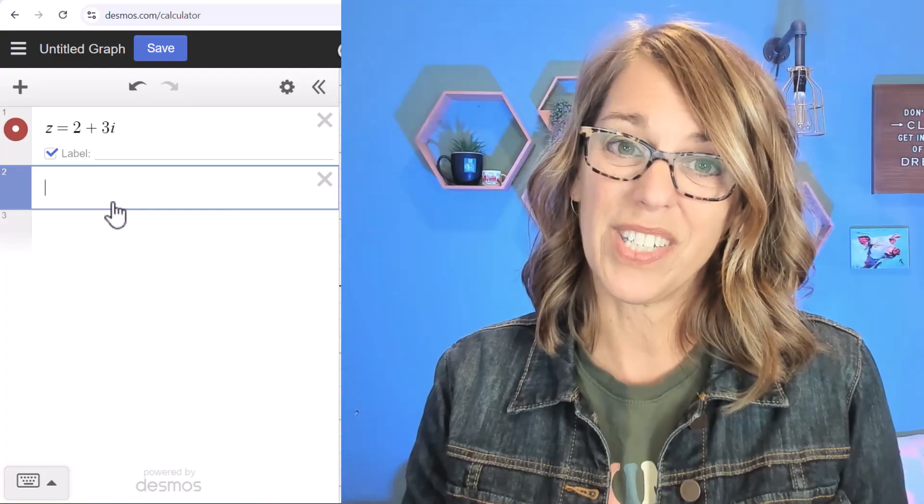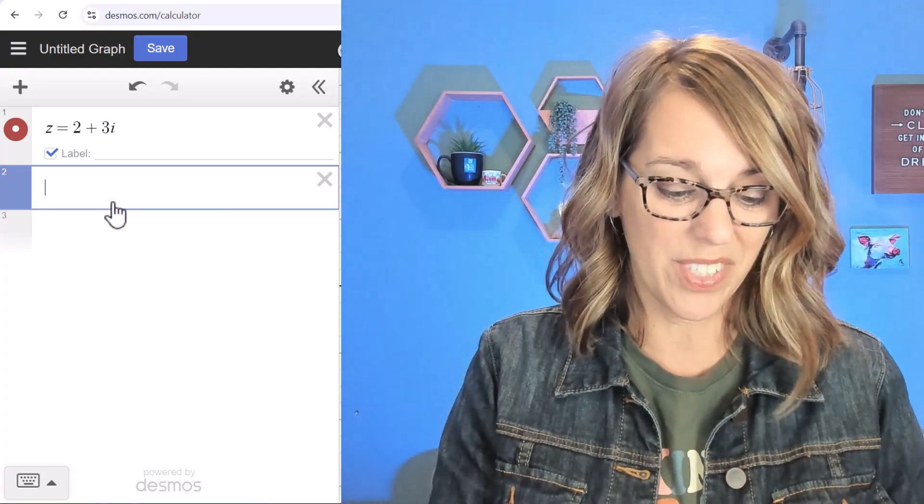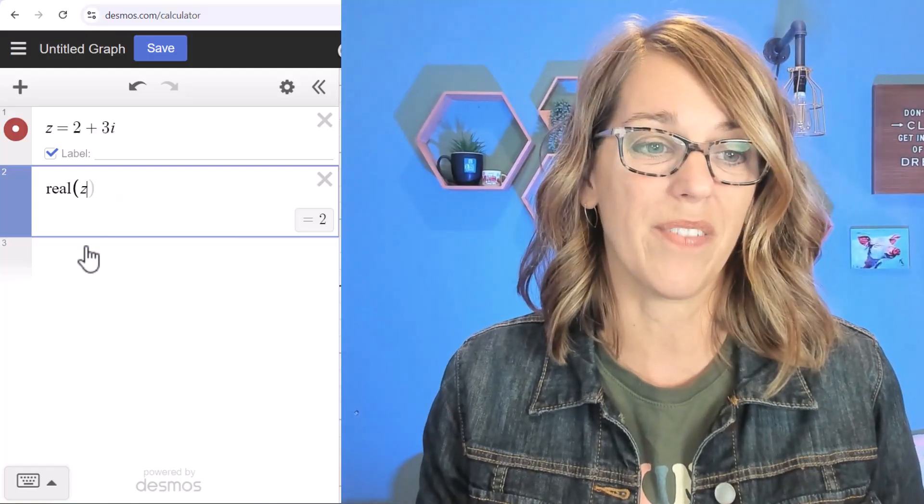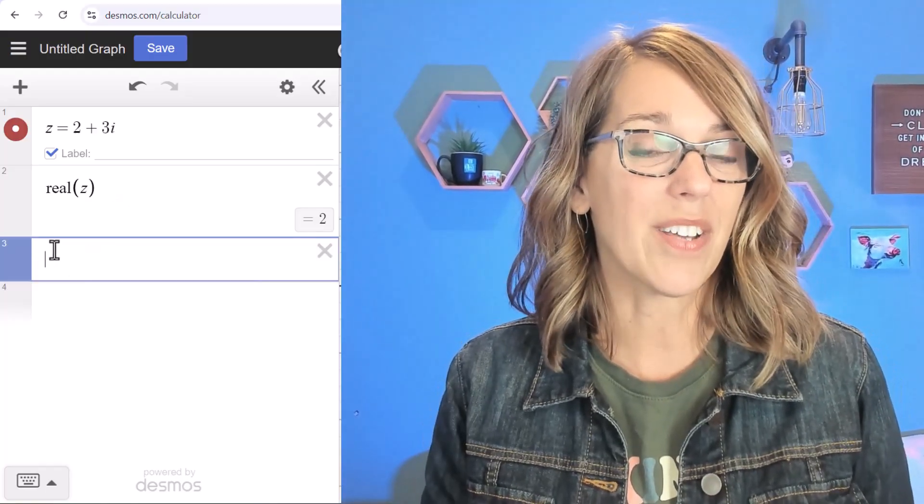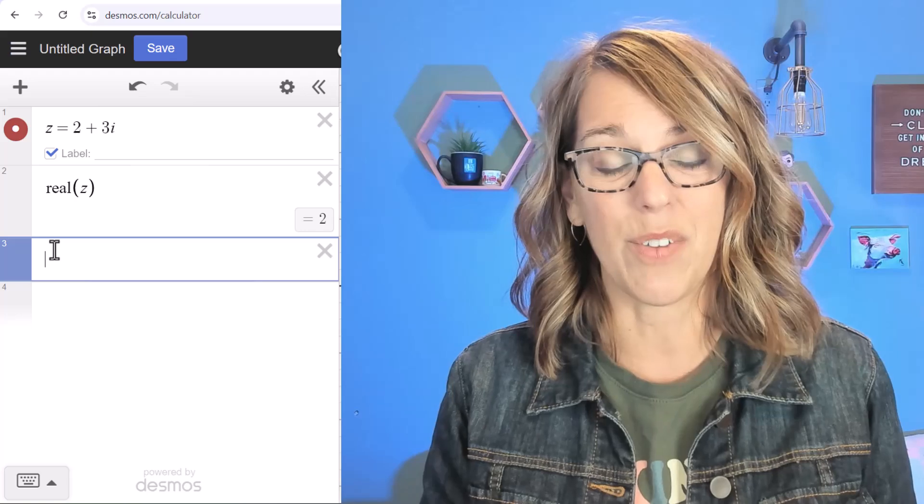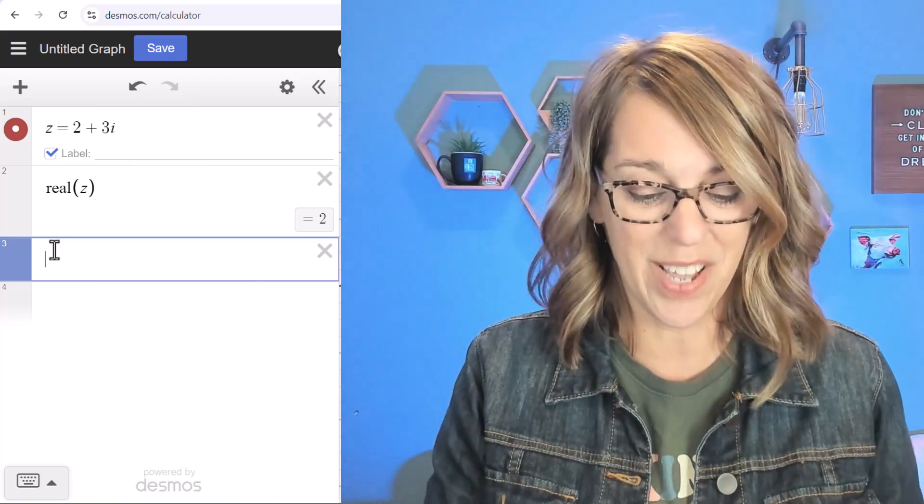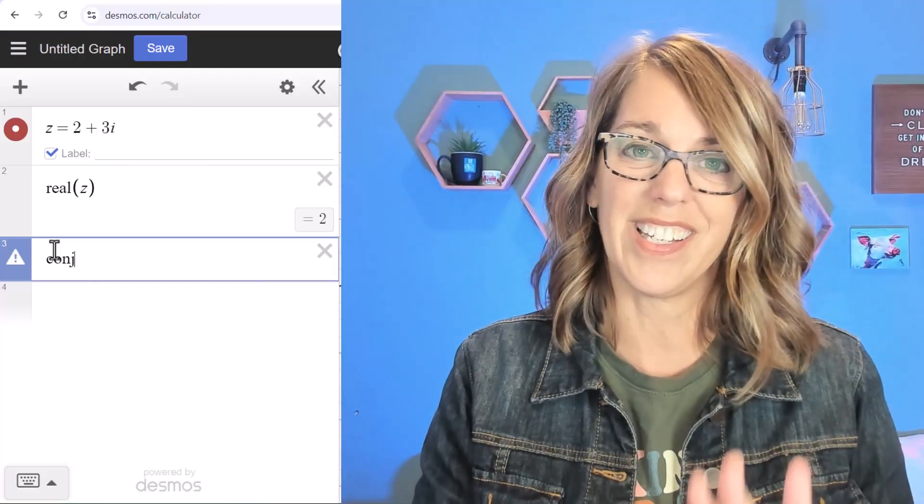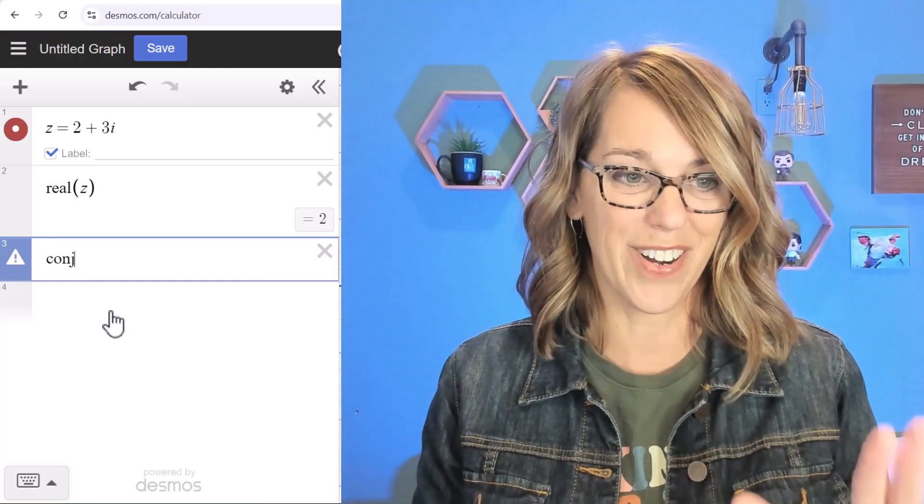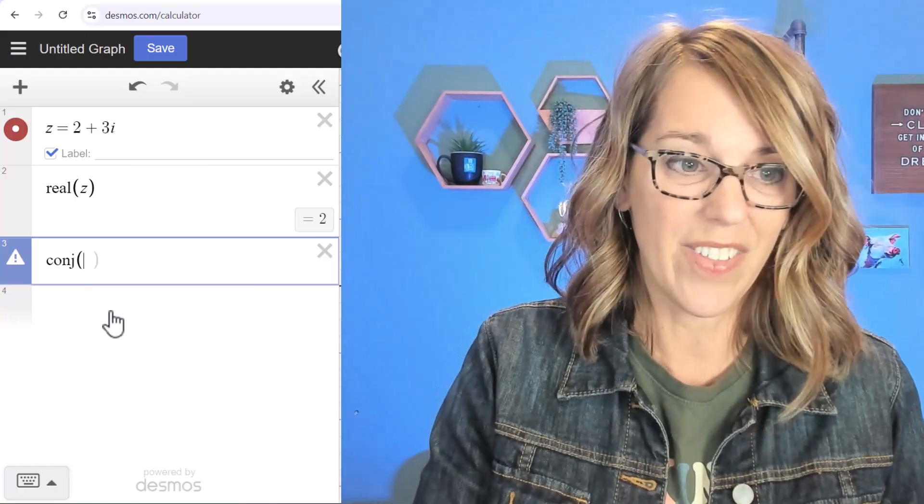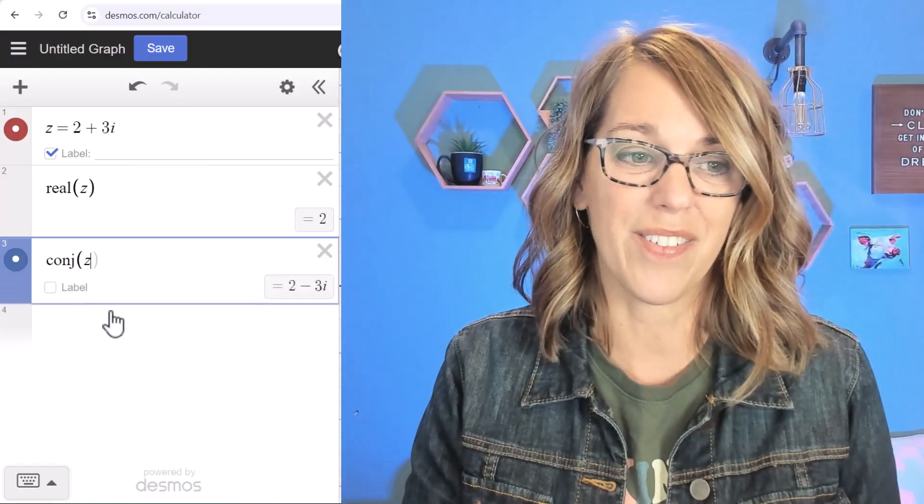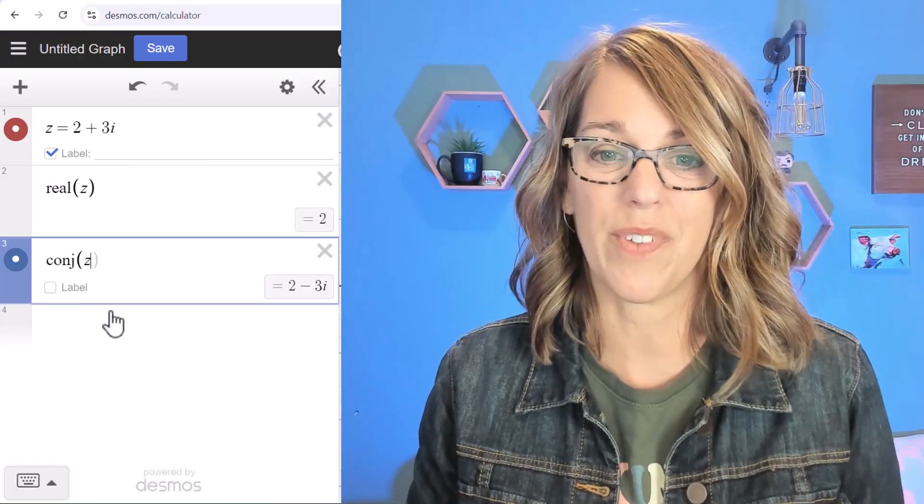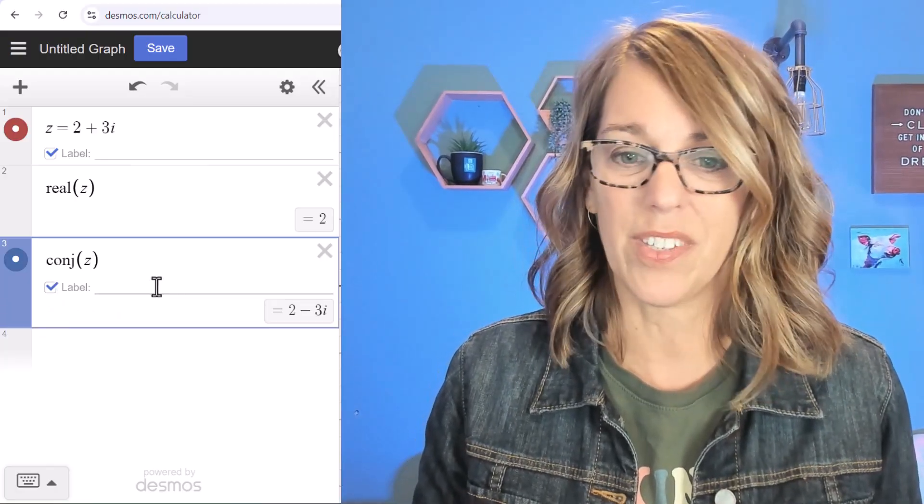We can take that complex number z and do some of those operations that we saw earlier. So we can ask for the real part of z. We can also ask it for the conjugate of z where we change the sign on the imaginary part. So I'm just going to start typing conjugate until it stops and makes it no longer italicized. So it's c-o-n-j, and then I want the conjugation of z. And notice how it changed that to 2 minus 3i. Let me label this one.